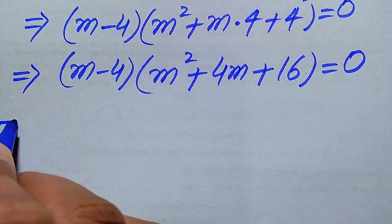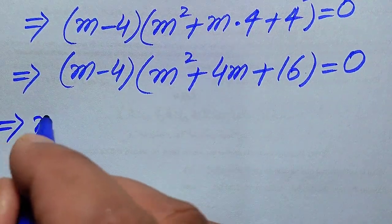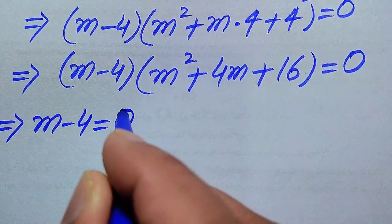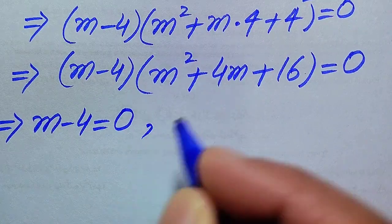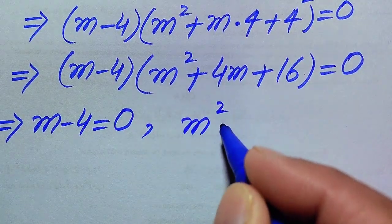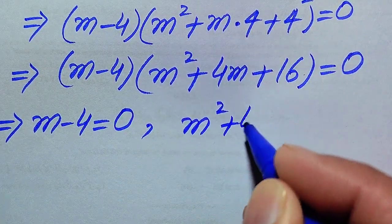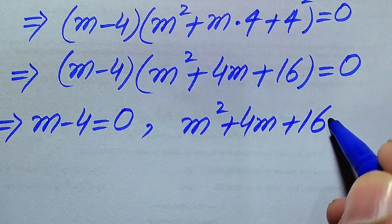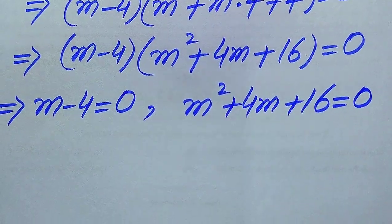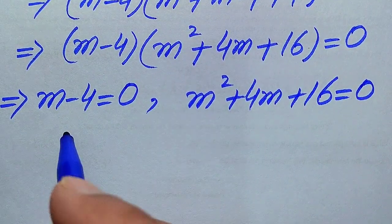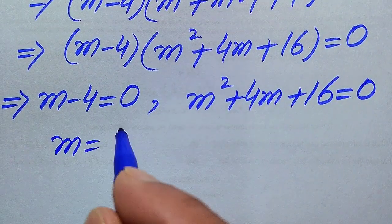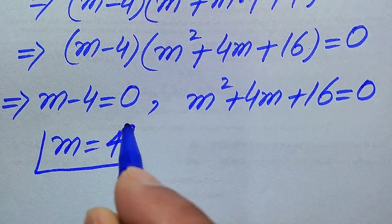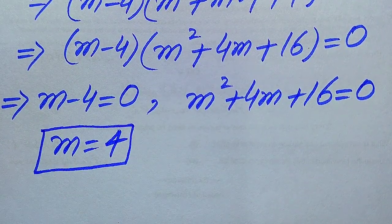We divide this into two cases. The first case gives m minus 4 equals 0, and the second case gives m squared plus 4m plus 16 equals 0. From the first case, we easily get m equals 4. This is the first real root of the given equation.